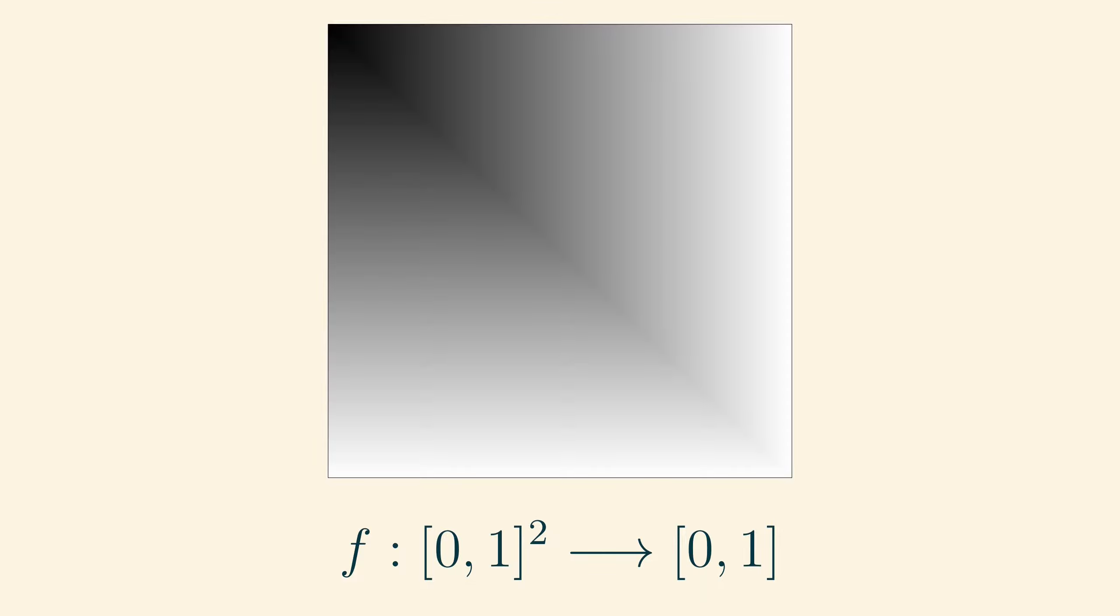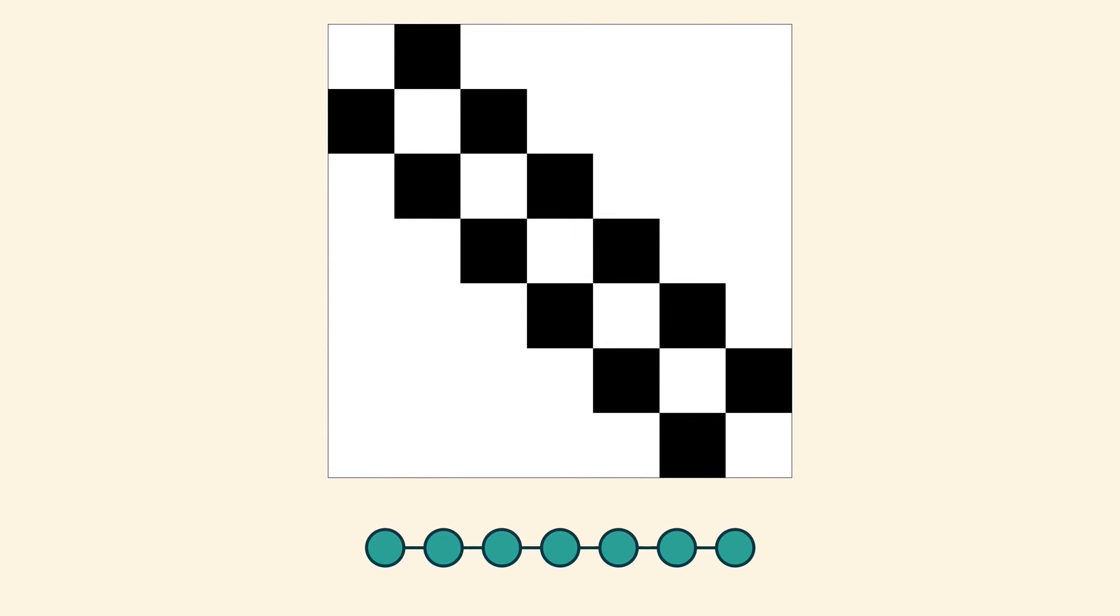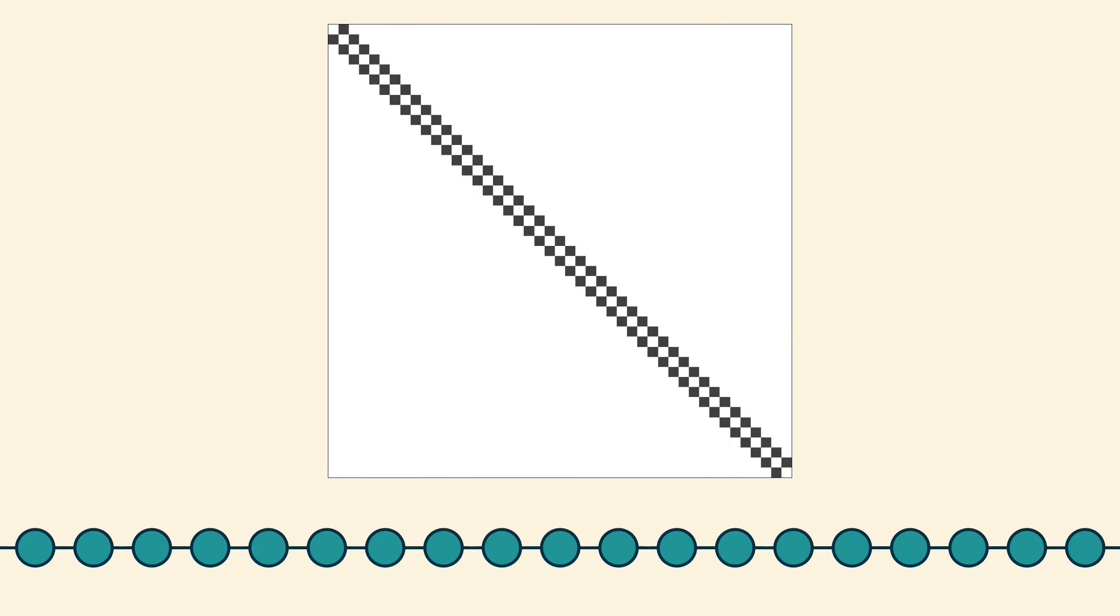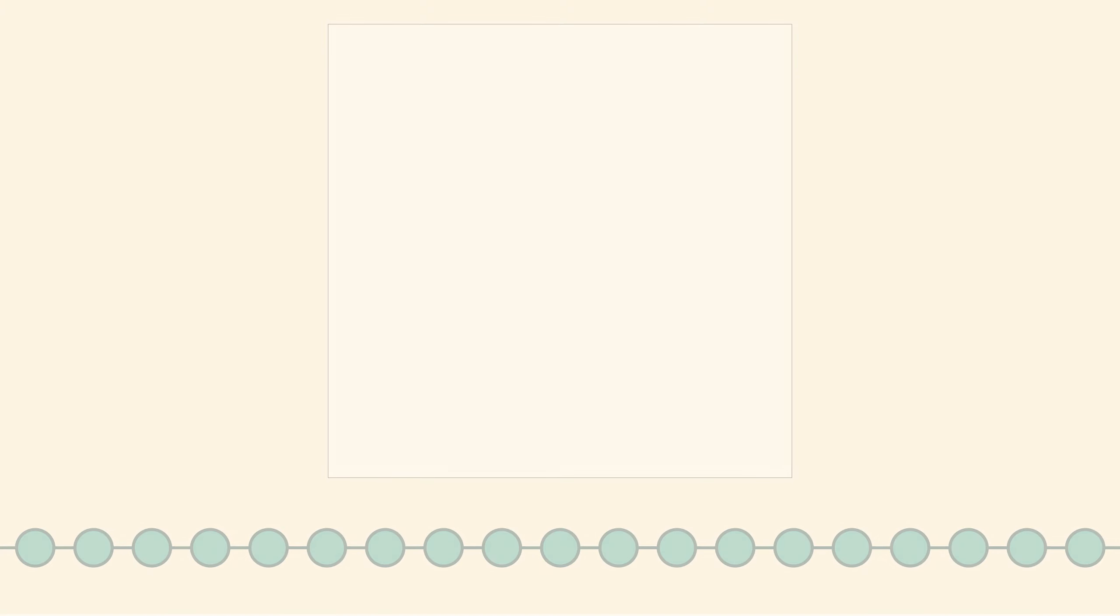This works well for so-called dense sequences of graphs, where the number of edges grows like the square of the number of vertices. But what happens for sparse sequences of graphs, where there are fewer edges? Consider, for example, the path graphs, whose pixel pictures look like this. As the paths get longer and longer, the proportion of black pixels goes to 0 in every region of the picture. So the limiting graphon is just 0 everywhere. And this is true for every sparse sequence of graphs, not just the path graphs. So the theory of graphons simply cannot differentiate between different types of sparse sequences of graphs.